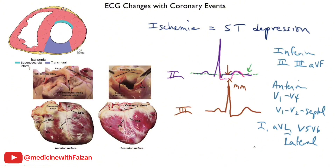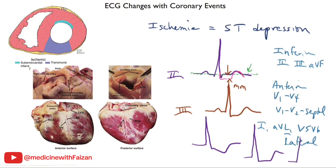The question is where exactly do you measure the ST segment, because ST segments can be depressed but they can have a changing slope. You can have ST segments that slope down, ST depressions that are horizontal, and ST depressions that are up-sloping. Down-sloping, horizontal, and up-sloping all have different meanings. Down-sloping is usually more serious, horizontal is moderately serious, and up-sloping tends to have the least significance.